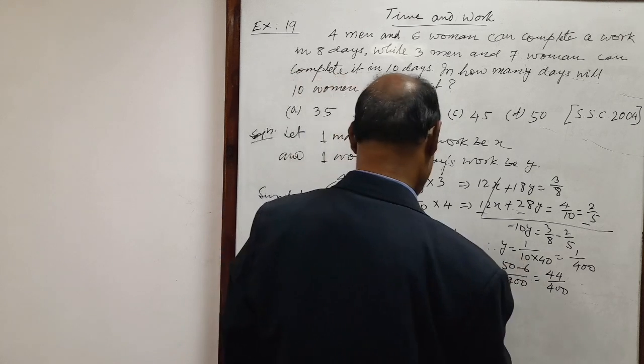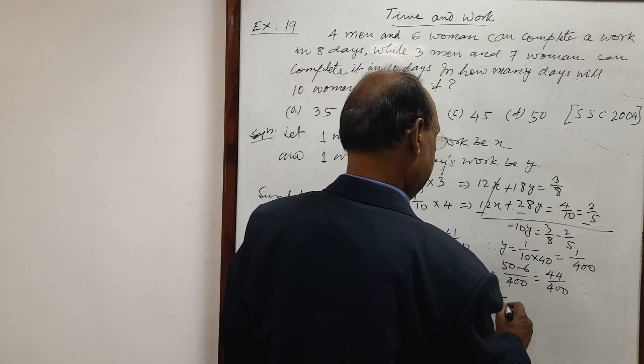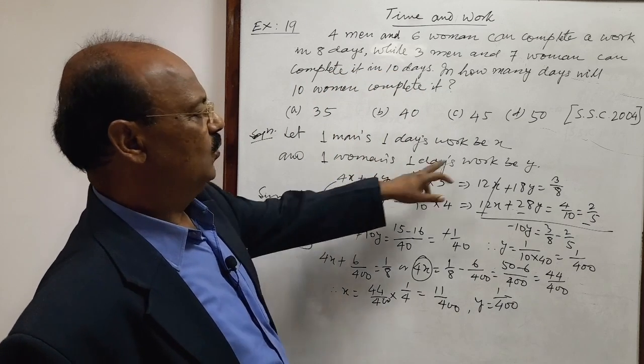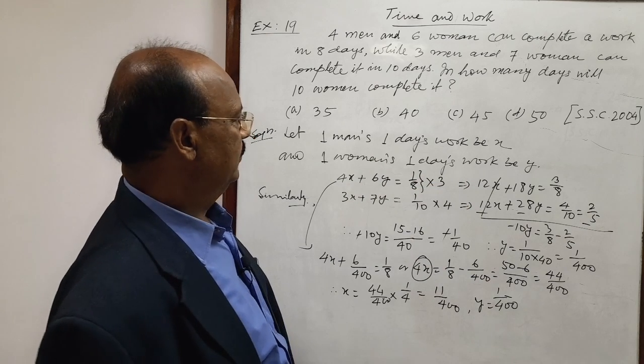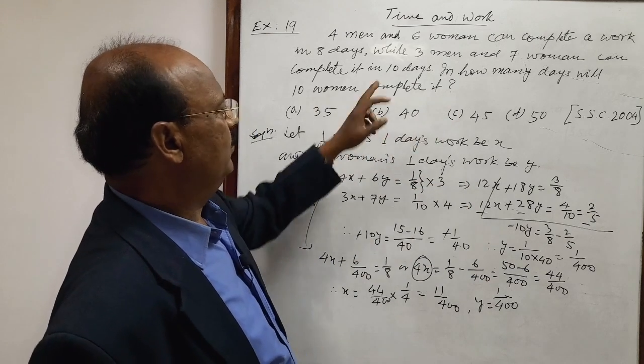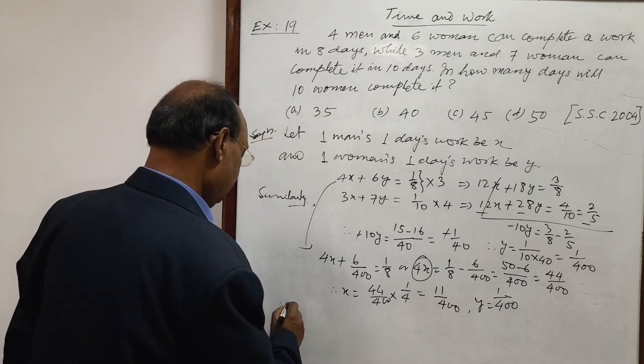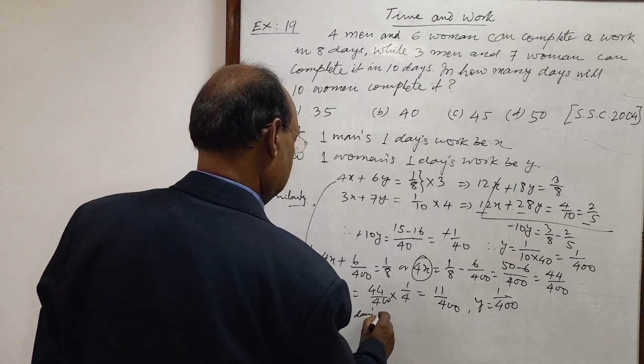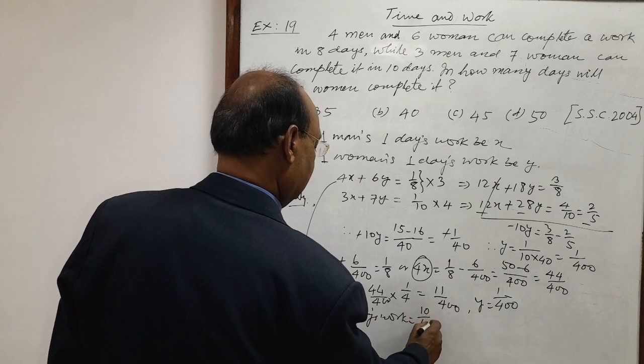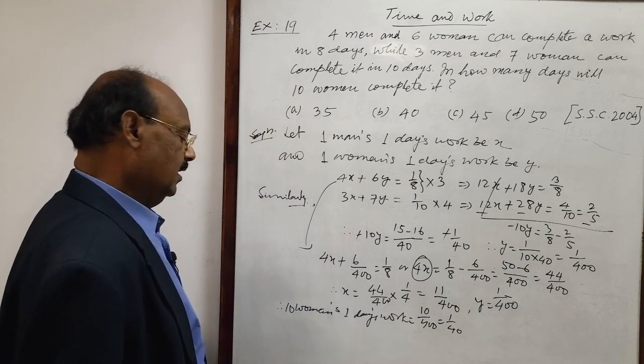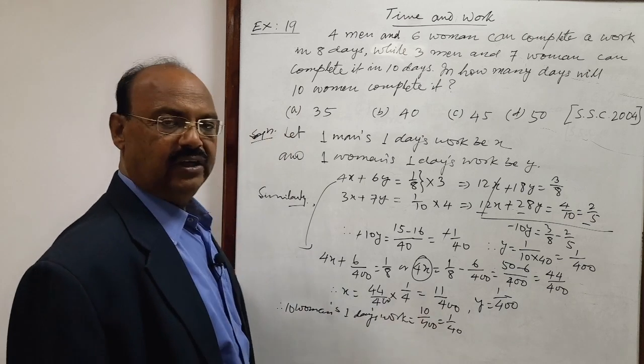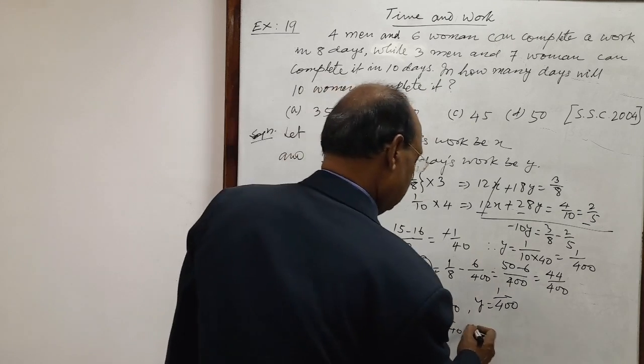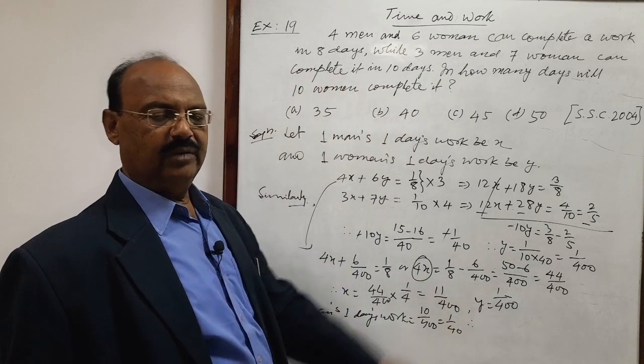Value of y, we have already calculated, that is one by four hundred. And what is y? Y is one woman's one day's work, that is one by four hundred. So in how many days will ten women complete the work? Therefore, ten women's one day's work is equal to ten by four hundred, that is one by forty. So ten women in one day can do one by forty work. And complete the work means amount of work will be one.